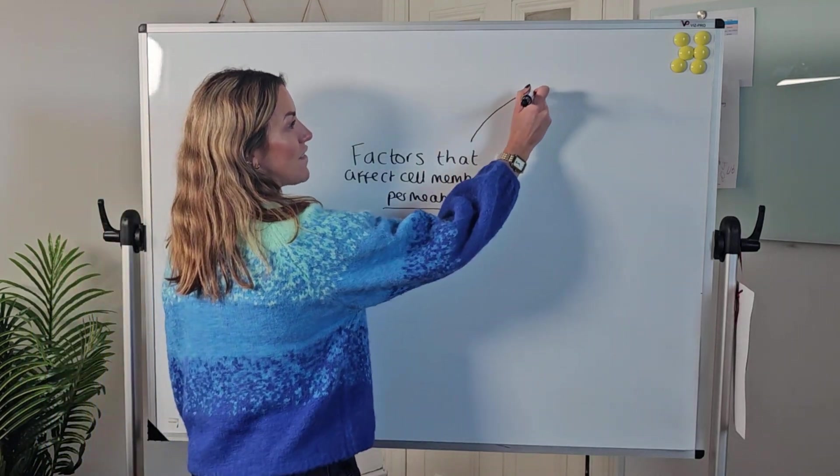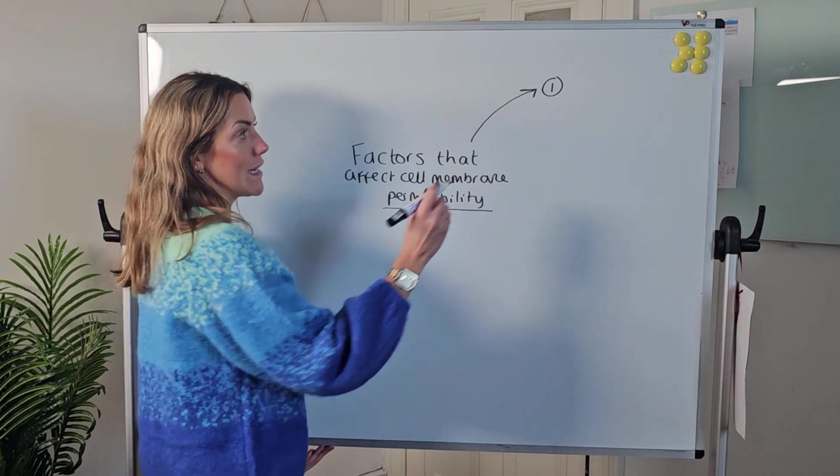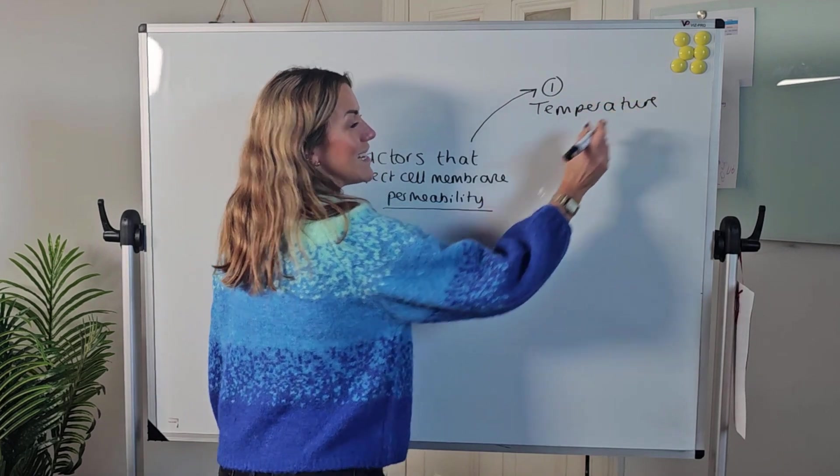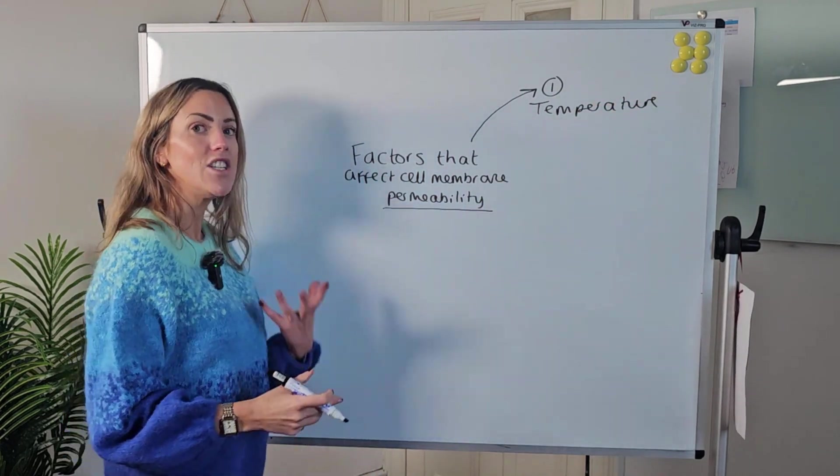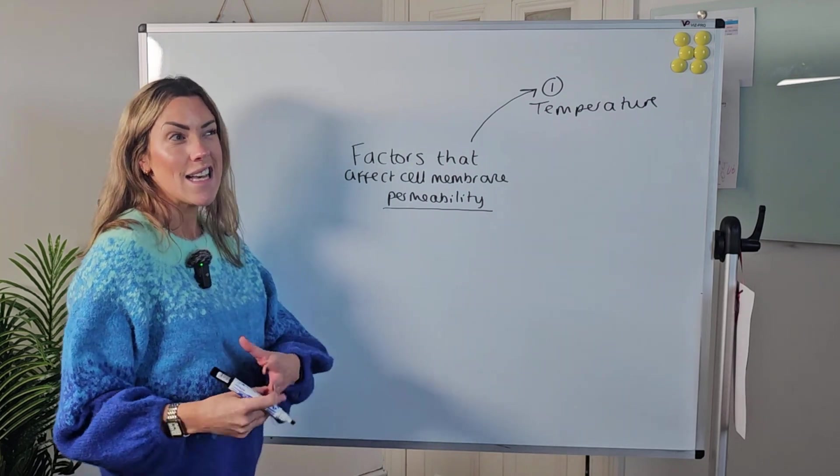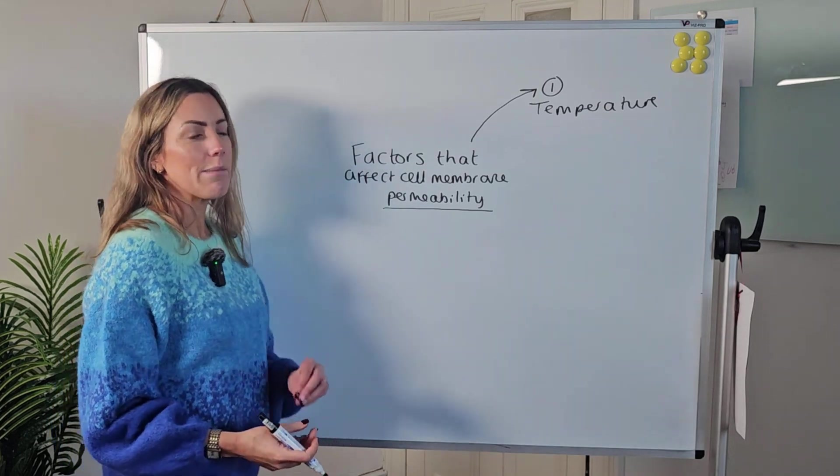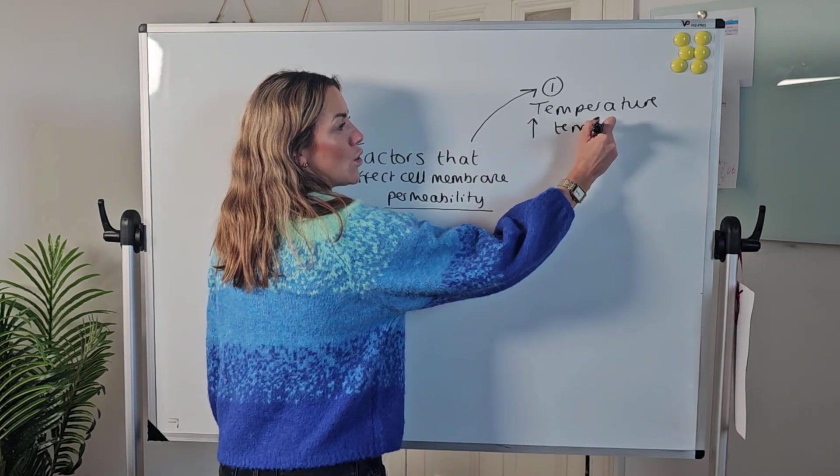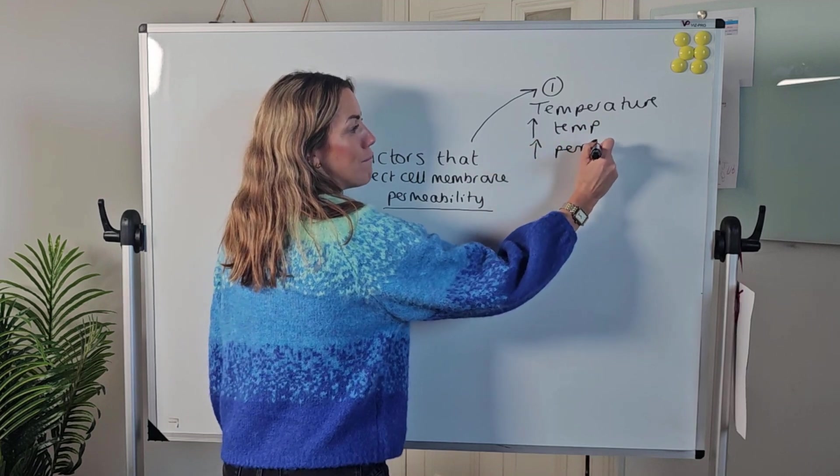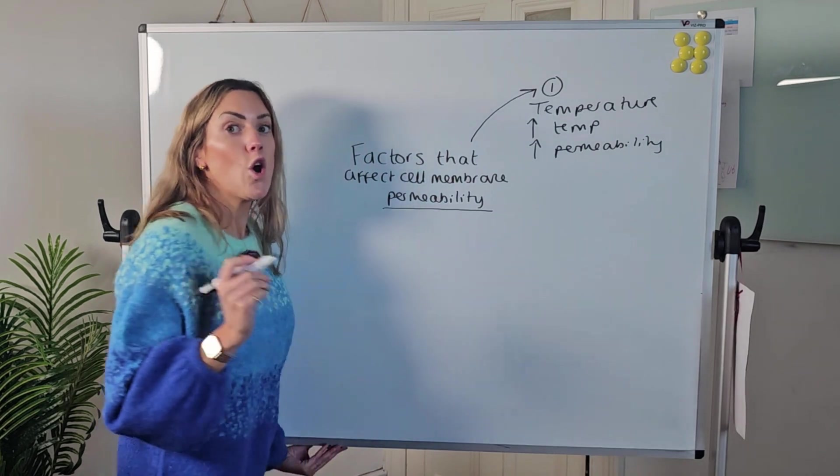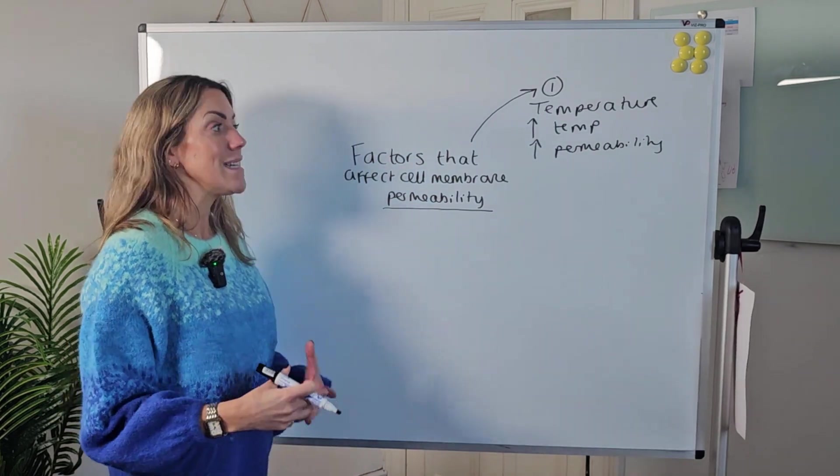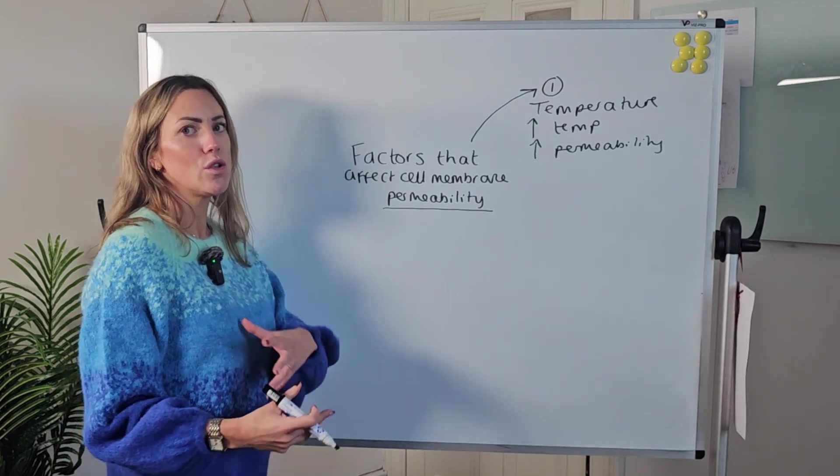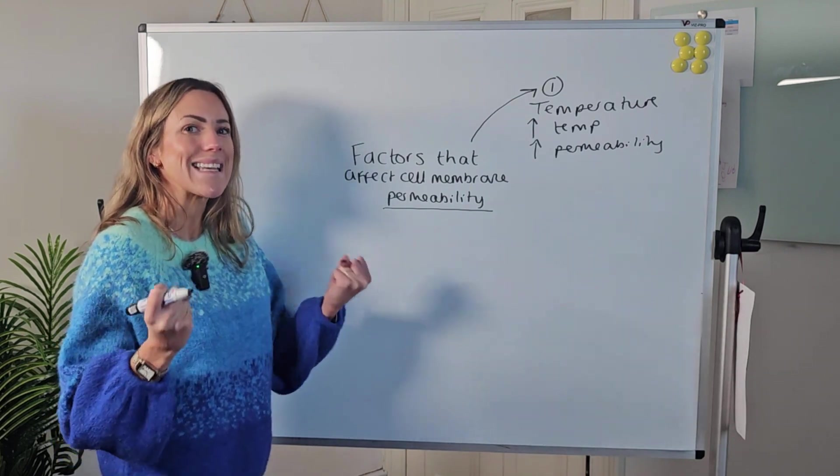The first factor that can affect permeability is temperature. This is quite self-explanatory because we learned back in GCSE about how temperature affects the rate of diffusion. As we increase the temperature, we increase the cell membrane permeability. If we increase the temperature, there's more thermal energy available and therefore particles or molecules end up having more kinetic energy.